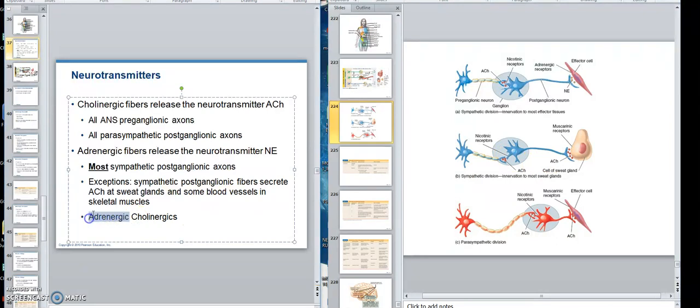Those that do that are called the cholinergic adrenergics. The cholinergic adrenergics, because it's the adrenalin nervous system, but it's secreting acetylcholine. The exception are those that go to sweat glands and some blood vessels and skeletal muscles will secrete acetylcholine. But all parasympathetic secrete acetylcholine, and all pre-ganglionics secrete that.